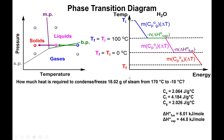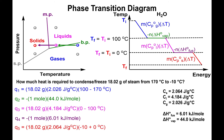A typical problem will give you a specific amount of substance — in this case water — starting at 170°C and going down to -10°C. You draw the graph with the 100°C boiling point and 0°C melting point horizontal reference lines, with T_initial at 170°C and T_final at -10°C. You're also given heat capacities: solid = 2.064, liquid = 4.184, and gas = 2.026 J/(g·°C), plus ΔH_fusion = 6.01 kJ/mol and ΔH_vaporization = 44 kJ/mol.